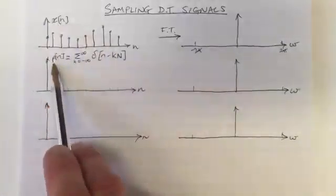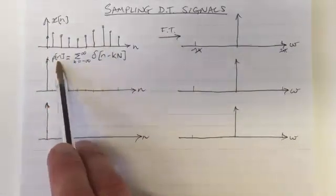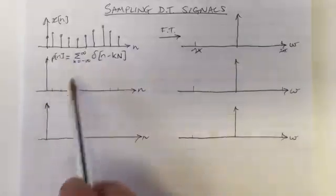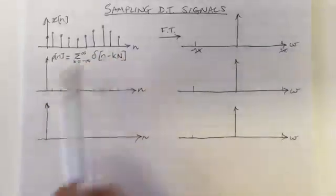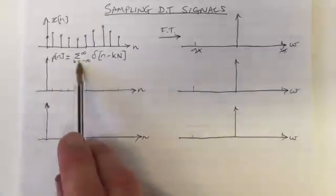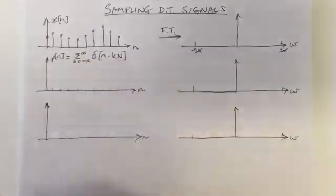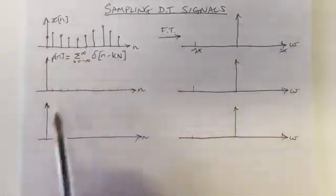We can multiply x(n) times p(n). p(n) is called the sampling waveform. And it's often written like this, and it's important that we understand what this means in graphical terms. So let's look at that.